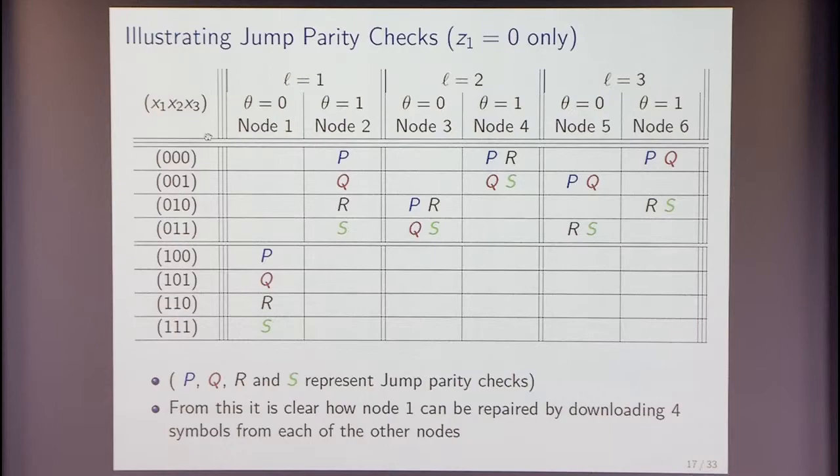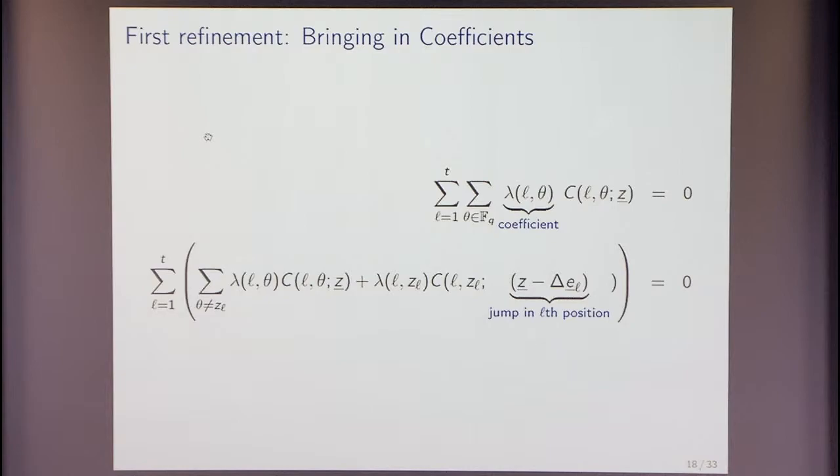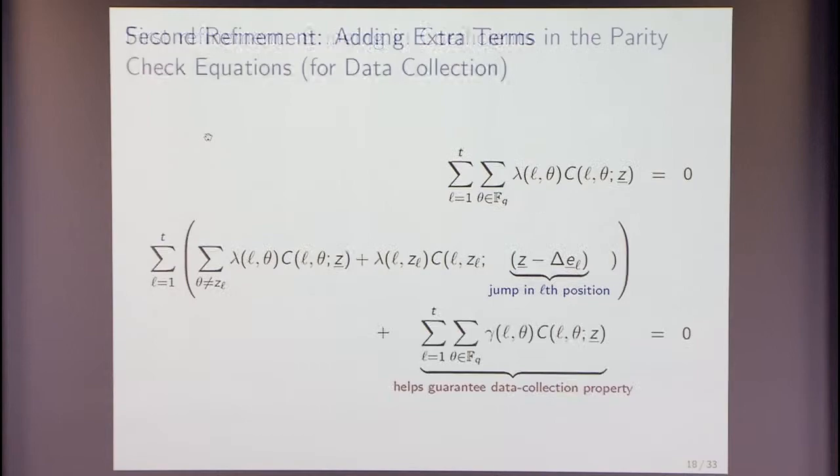I mean, this idea of zigzag parity was there in the earlier paper, but I think one difference may be that the focus there was on a fixed number of parities, perhaps, and focus was on starting with a systematic code, whereas we just say, no, no, there's nothing, no systematic nodes, all nodes are the same. So, those are some two slight differences. Okay, so, what are the refinements? The refinements are, first of all, you do bring in coefficients. So, it's not a row sum parity, it just doesn't mean you add the symbols, but you scale and add. And then, the second thing is that you also need to add some more terms to your jump parity to help you do data collection.